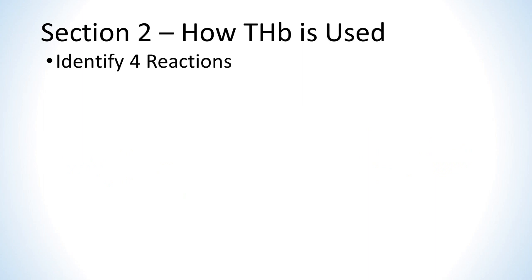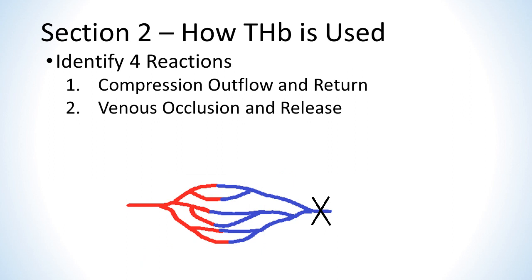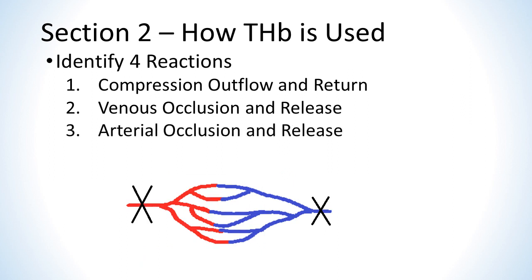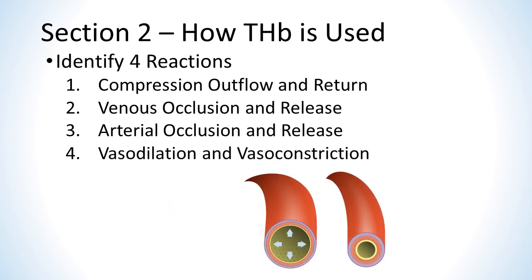Let's look at the four types of blood volume reactions that can be identified using THB: compression outflow and return, venous occlusion and recovery, arterial occlusion and recovery, and vasodilation or vasoconstriction — also known as vascular tone.